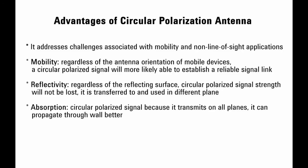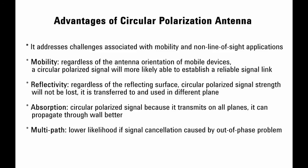Regarding absorptions: a linearly polarized signal will have difficulty penetrating walls containing metal, whereas a circularly polarized signal, because it transmits on all planes, will be able to propagate through the wall to deliver a stable link. Regarding multipath: multipath signals create an out-of-phase problem, resulting in dead spots, decreased distance, and reduced throughput. Linearly polarized antennas are more susceptible to multipath due to the increased possibility of refraction, while a circular polarized antenna transmitting on all planes will have a lower likelihood of signal cancellation caused by out-of-phase problems.